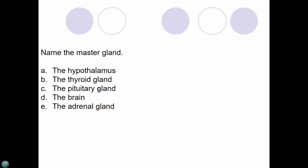Question: name the master gland. The pituitary is the master gland. The hypothalamus is the regulator — it's the transition between the brain and the endocrine system, where all the thermostats are located. The master gland is the pituitary because it produces more hormones than any other gland in your body. But they work together as a system.